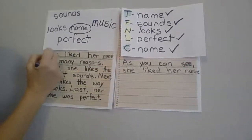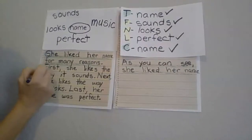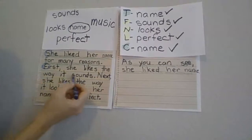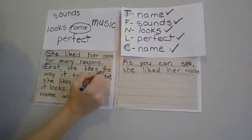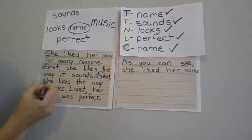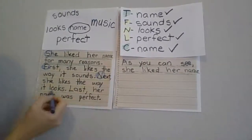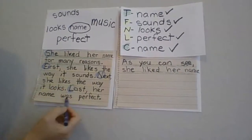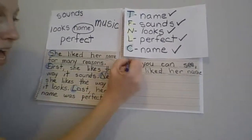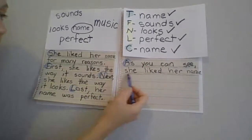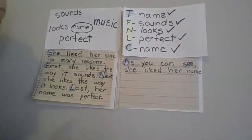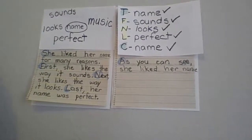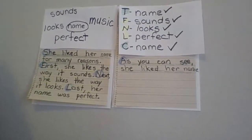First — beginning of the sentence. First, she likes the way it sounds. Circle it. Next. Next, she likes the way it looks. Last. Her name was perfect. As you can see, she liked her name. If you have other capital letters, there should not be others — you will need to use your eraser and change those capitals to lowercase.